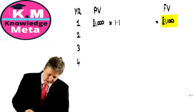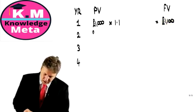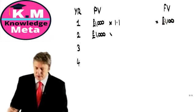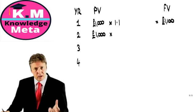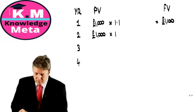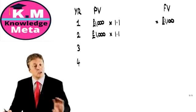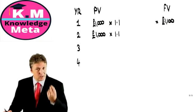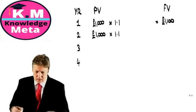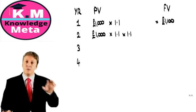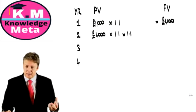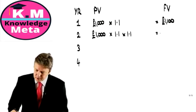If that's the case, to establish the value at the end of the second year, all we do is this. Our present value was £1,100. We multiplied by 1.1 to uplift for interest in the first year. And in the second year, we just do the same again. We charge a further 10% on the full amount that we already have. That gives us something like £1,210.